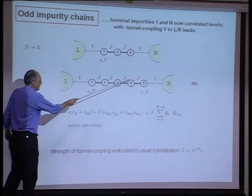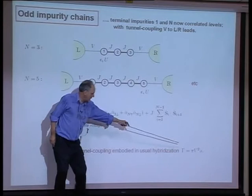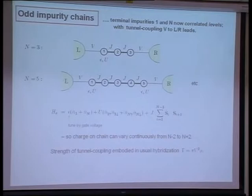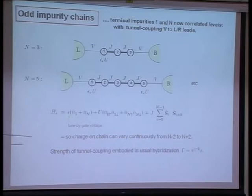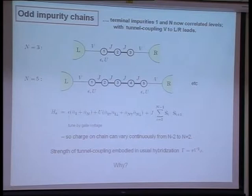We also have tunnel coupling between the Anderson-like levels at the beginning and end of the chain and the respective leads, with hybridization strength Gamma equals pi V-squared rho. If we tune epsilon by gate voltage, the charge in the chain varies continuously from N minus 2 up to N plus 2. The questions are: what happens to the two-channel Kondo state when we allow this variable charge by tuning epsilon?